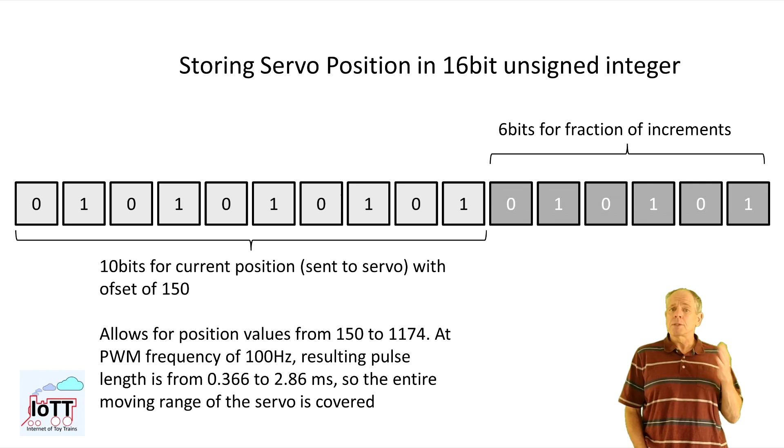More importantly, for a servo decoder with 16 channels, it saves me 32 bytes, which is significant.